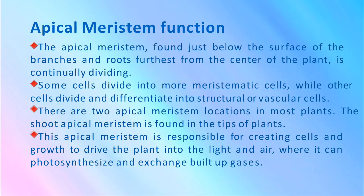There are two apical meristem locations in most plants. The shoot apical meristem is found at the tip of plants. The apical meristem is responsible for creating cells and growth to drive the plant into light and air where it can photosynthesize and exchange built-up gases.